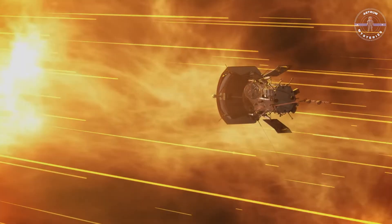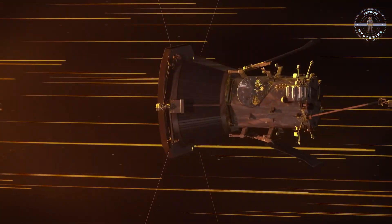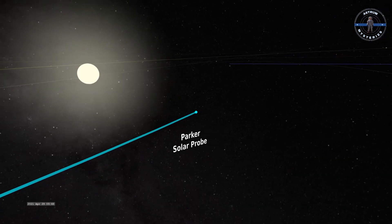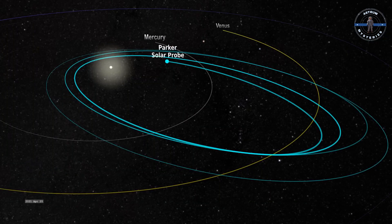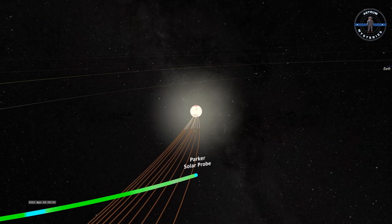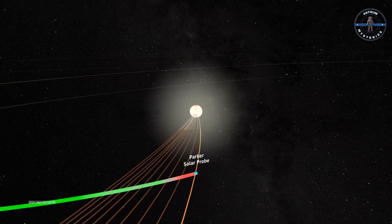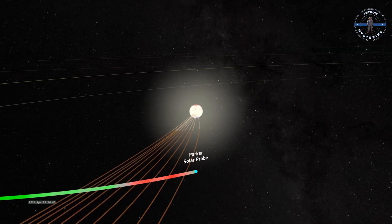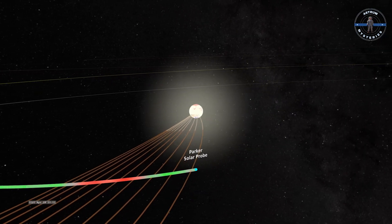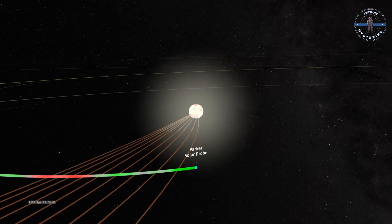Let's talk about speed. The Parker Solar Probe isn't just fast, it's mind-blowingly fast. On June 29, 2024, it hit a staggering 394,736 miles per hour. Imagine circling the Earth in less than a minute.